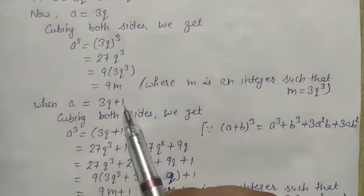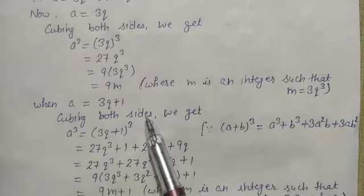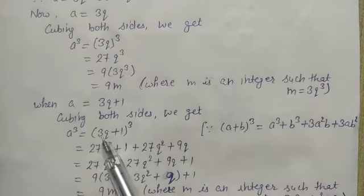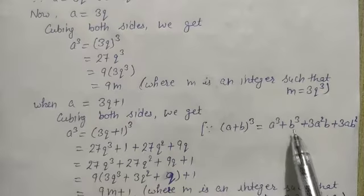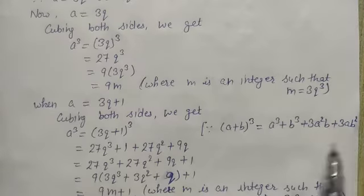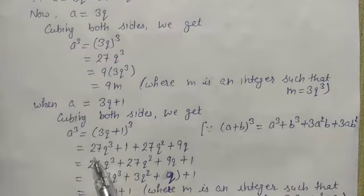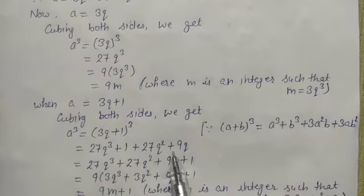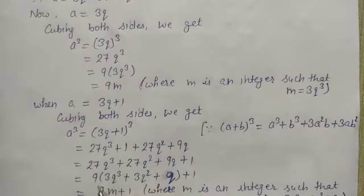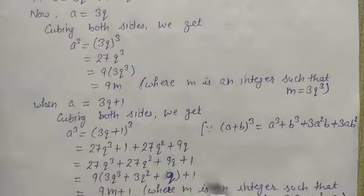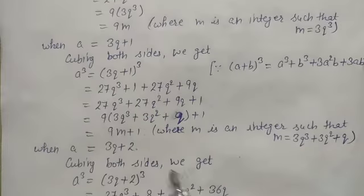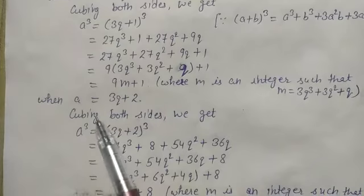When a equals to 3q+1, cubing both sides and applying (a+b)³ equals a³+b³+3a²b+3ab², we get 27q³+1+27q²+9q. Rearranging and taking 9 common: 9(3q³+3q²+q)+1. Putting 3q³+3q²+q equals m, where m is an integer, we get a³ equals 9m+1.